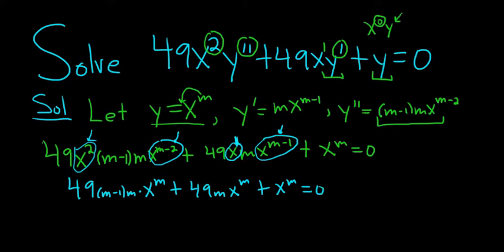So now what you do is you pull out an x to the m. So x to the m, this will be 49m, m minus 1. I wrote it a little bit differently. I don't know why I did that, but I just put the m in the front. Plus 49m plus 1. And that's equal to 0.